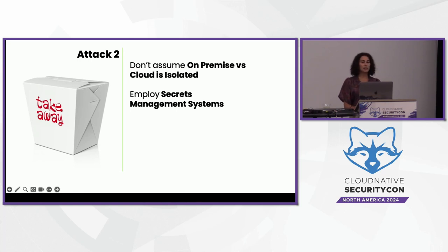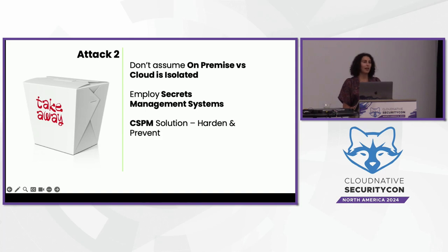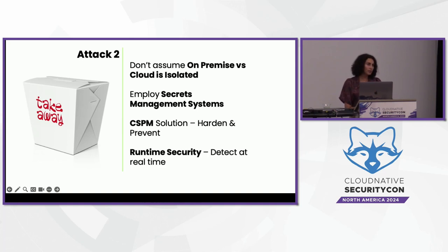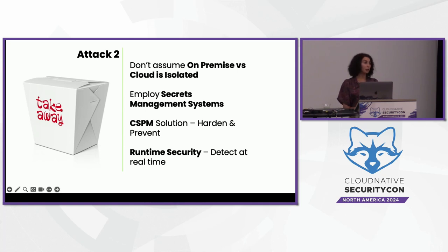Employing a secrets management system will reduce your likelihood of credential leaks by keeping keys and credentials in a centralized location and providing an API to dynamically retrieve them, reducing the chance they are inadvertently left in files. CSPM solutions help you harden and prevent misconfigurations, but you also need runtime security at both the cloud logs and on activity occurring in your compute resources to understand attacks that cross detection boundaries.